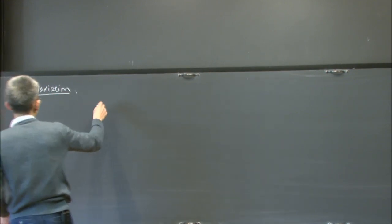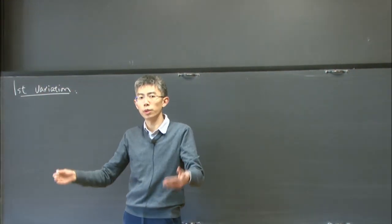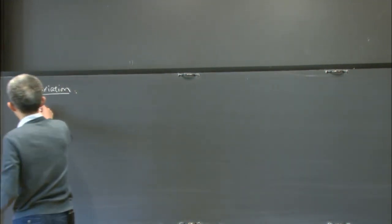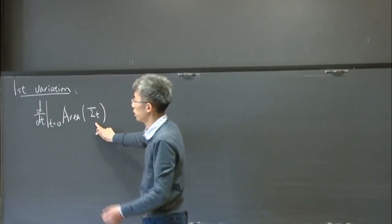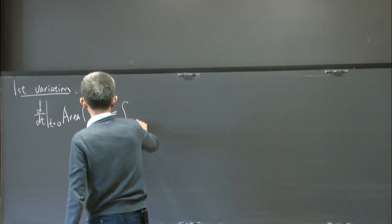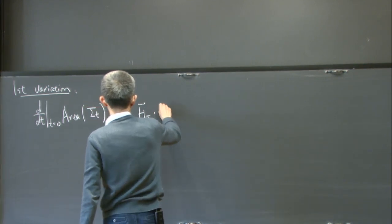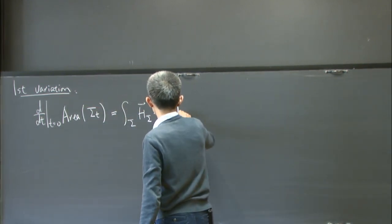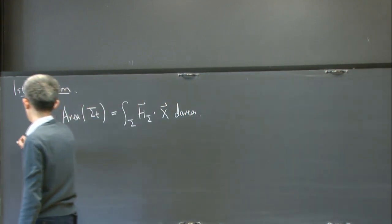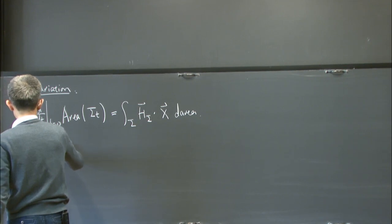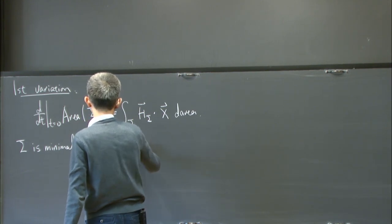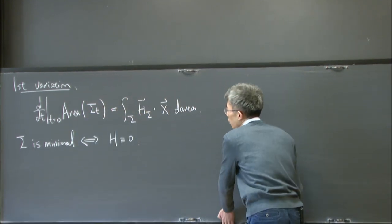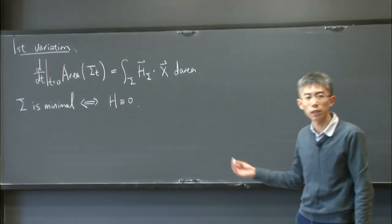The first important fact is the first variation formula of the area functional, which says that if you have a hypersurface and deform it by an ambient vector field, you calculate what changes to the area. The result is the integral of the mean curvature vector dotted with the deformation vector field. So sigma is minimal if and only if the first variation is zero, if and only if the mean curvature is identically zero.